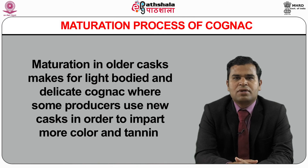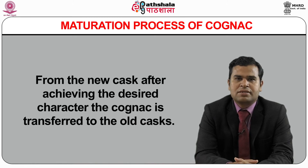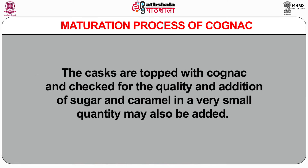The time period for maturation in wood differs by Cognac, but a minimum of one and a half years is essential. Some are aged for two to four years, while many Cognacs are aged for much longer. Limousin and Tronçais are the species of oak used in making casks for maturation. Maturation in older casks makes for light-bodied and delicate Cognac, while some producers use new casks to impart more colour and tannin. After achieving the desired character, the Cognac is transferred to old casks. The casks are topped up and checked for quality, and a very small quantity of sugar and caramel may be added. The quality of Cognac only improves for the time it is kept in wood.